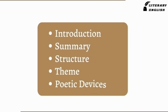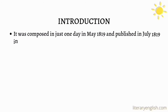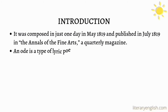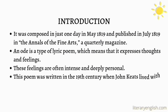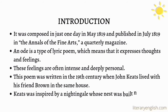'Ode to a Nightingale' was composed in just one day in May 1819 and was published in July 1819 in the Annals of the Fine Arts, a quarterly magazine. An ode is a type of lyric poem which means that it expresses thoughts and feelings. These feelings are often intense and deeply personal. This poem was written in the 19th century when John Keats lived with his friend Brown in the same house.